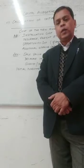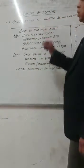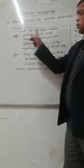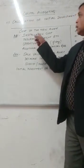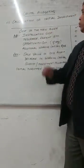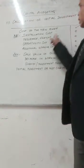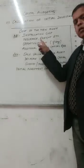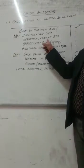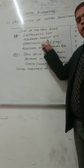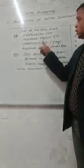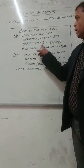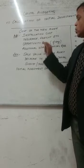So first we are going to understand about the initial investment. Initial investment is also known as the net cash outflow. In initial investment, the first thing we have to take is the cost of the new asset. To this, we add the installation cost, insurance, freight, etc. incurred in purchasing the asset. If there is any opportunity cost, that is also to be added to the cost of the new asset.